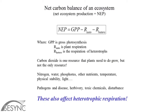We haven't even started to talk about heterotrophic activity. This equation is trying to predict net ecosystem production — the total amount of carbon stored by the ecosystem, not just by plants. Studies are only really beginning to look at what the effects of elevated CO2 are on other components of this equation, particularly heterotrophic respiration.